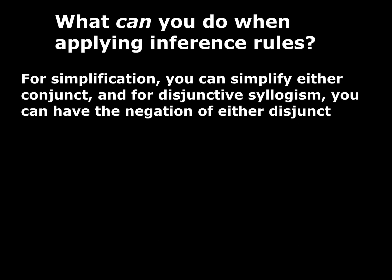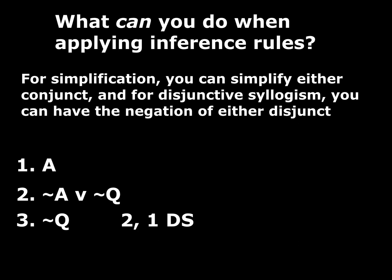For simplification, you can simplify either conjunct — the first one or the second one. For disjunctive syllogism, you can have the negation of either disjunct and then derive the other one. For example, in a disjunctive syllogism we have a disjunction and the negation of the first disjunct, so we derive the second. But you could also have the negation of the second disjunct and derive the first by DS. That's fine also.